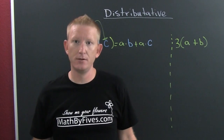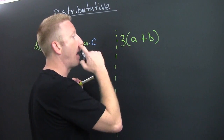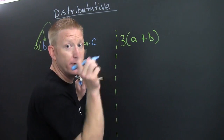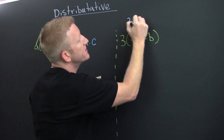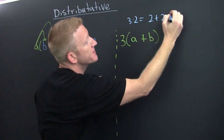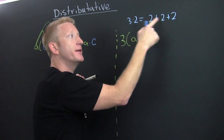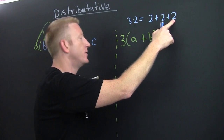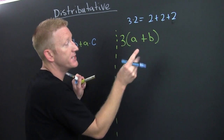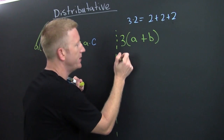Now if we had three times ab — note, if you had three times two, what would you do? That would be two plus two plus two, or two added three times. Two times three is six, and two plus two plus two is six. Anyways, here we can have three times this, which means this plus this plus this.